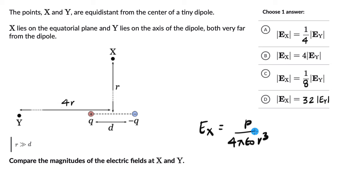P is the dipole moment. The electric field on the axis, EY, equals negative 2P divided by 4πε₀ times (4r)³.